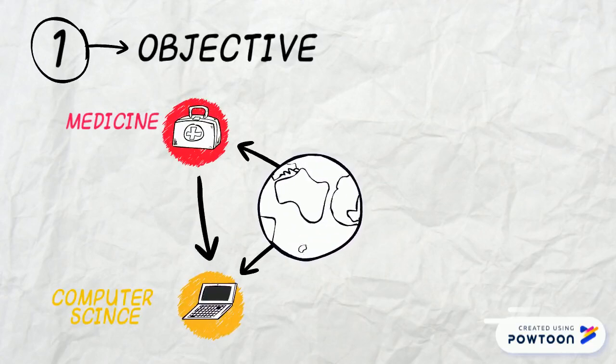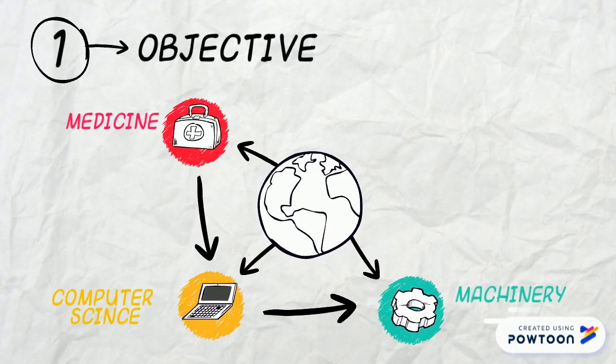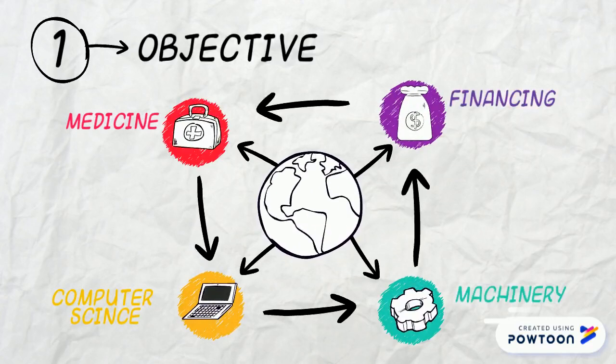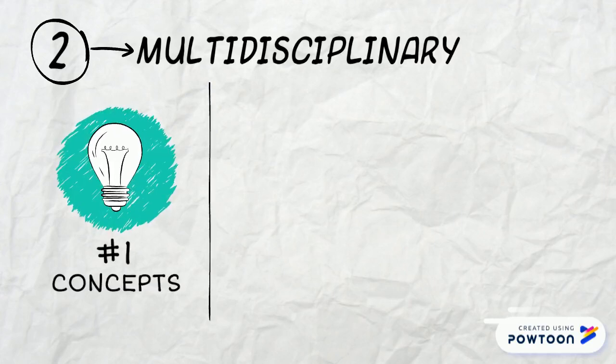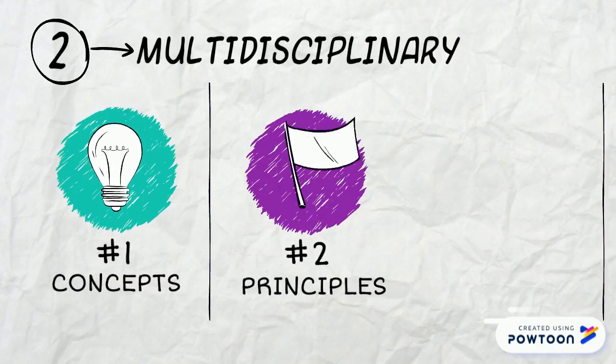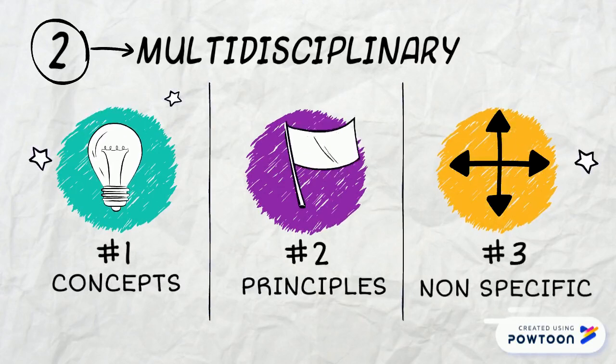Its premise is that complex systems share organizing principles which can be discovered and modeled mathematically. General Systems Theory is about developing broadly applicable concepts and principles, as opposed to concepts and principles specific to one domain of knowledge.